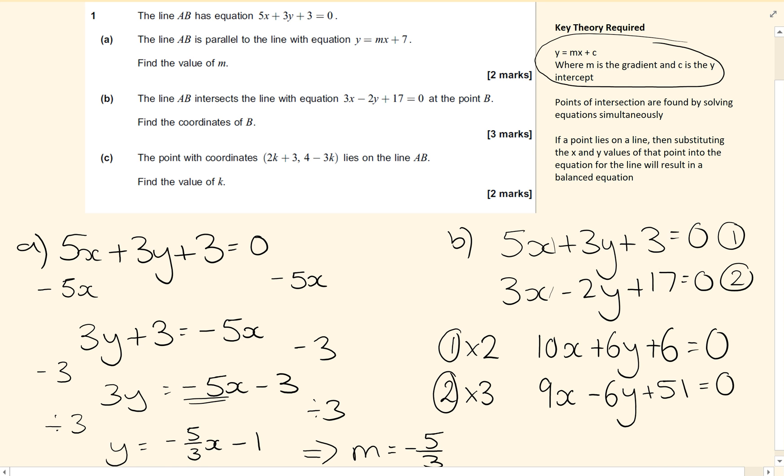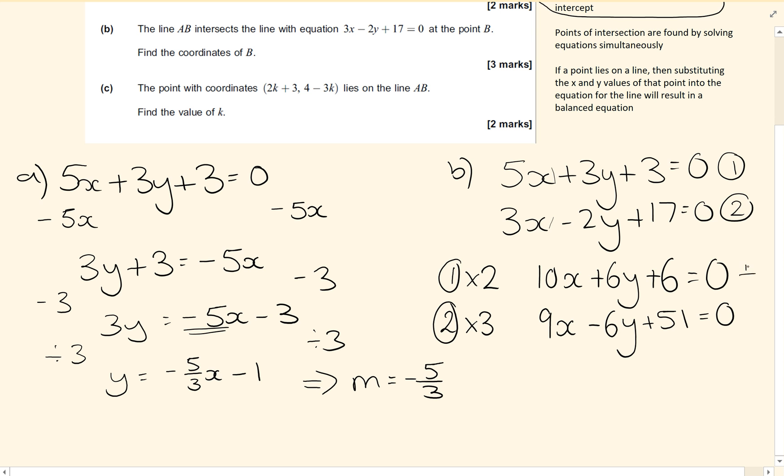And now because we've got a plus and a minus here, we are going to add the two equations together. So adding these two equations together leaves me 19x, the y's are going to cancel each other out, plus 57 equals 0.